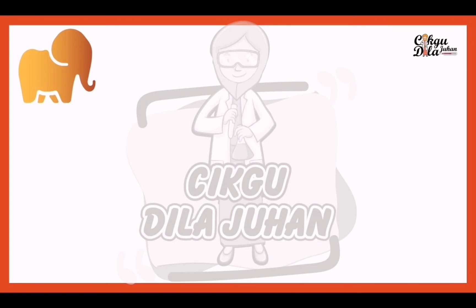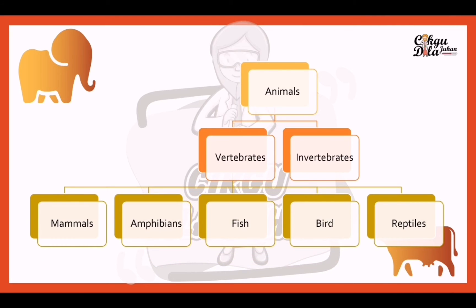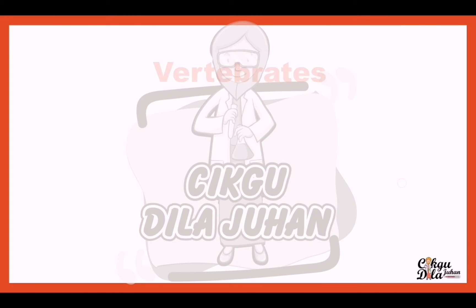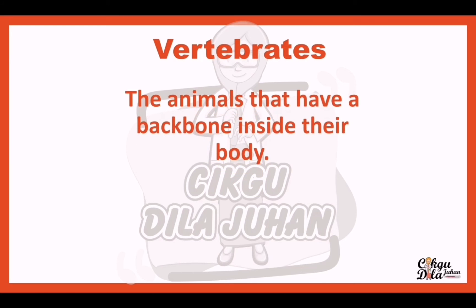Animals can be divided into two types: vertebrates and invertebrates. Vertebrates can be classified as mammals, amphibians, fish, birds, and reptiles. Vertebrates are animals that have a backbone inside their body.